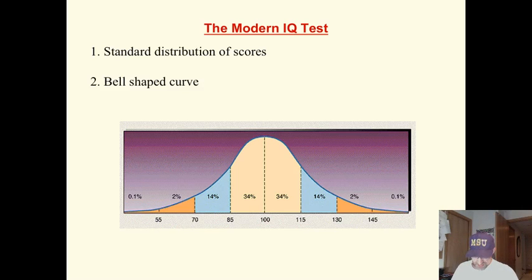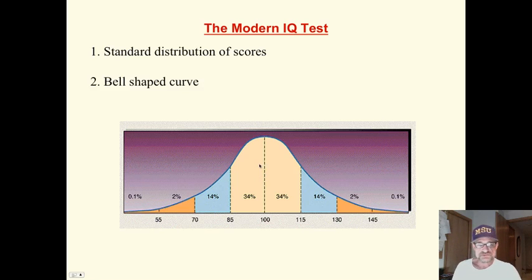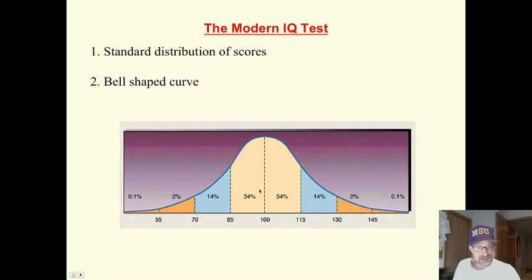The modern IQ test has a nice standard distribution of scores where we compare people across the same age and category. In a normal distribution, here is a normal population — this is average. Fifty percent are above, fifty percent are below, and sixty-eight percent are right in this average spot. By the way, did you know there is a school in Minnesota where half the students are below average? Every school — if it is average — by definition you are going to have half below and half above. So this is the bell-shaped curve.